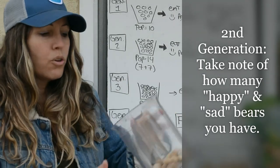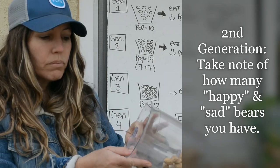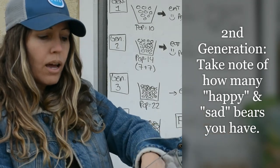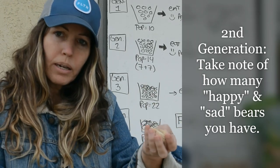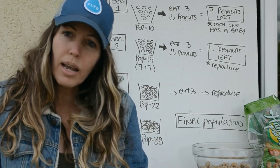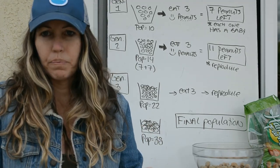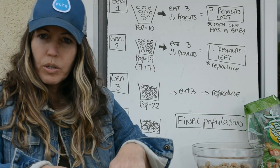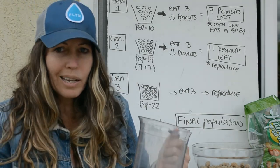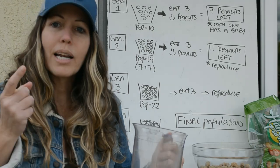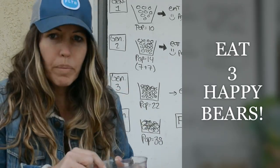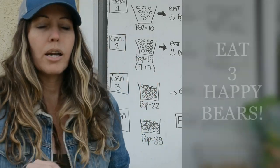Take your fourteen, dump them out on your desk, and count how many happy and how many sad bears you have — you're analyzing the genetics of the population. Put all bears back in your cup, which is fourteen, and then eat three happy bears. If no happy bears are left, grab one or two sad bears, but grab a total of three.